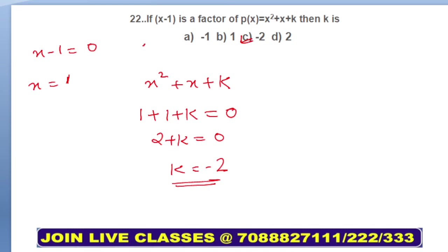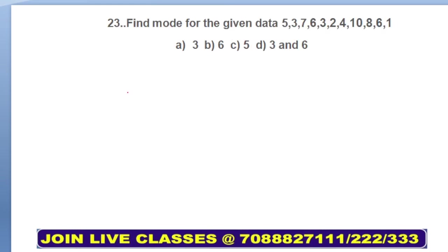Next, question 23. Find mode for the given data. Mode is the number that occurs the maximum number of times. Just look at the numbers: 3 occurs 2 times and 6 also occurs 2 times, so your mode is 3 and 6.